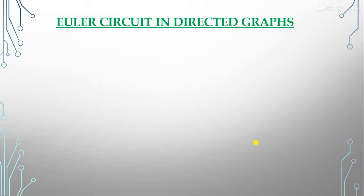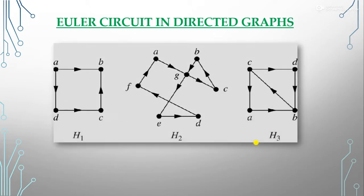Now we talk about Euler circuits in directed graphs. If we have directed graph H1, we can only move in the allowed directions — A to B, A to D, D to C, C to B — but we cannot go B back to A, so it does not form an Euler circuit.